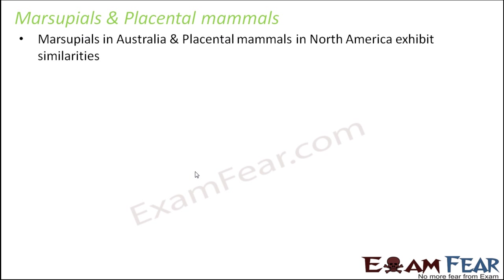Marsupials in Australia and placental mammals in North America exhibit similarities despite occupying different geographic locations. Both adapted in similar ways to particular food supply, locomotory skill, or climate. Looking at their behaviour and structure, it can be assumed they were separated from a common ancestor millions of years ago. Despite geographic separation, both produced varieties of species with similar habitats and ways of life.